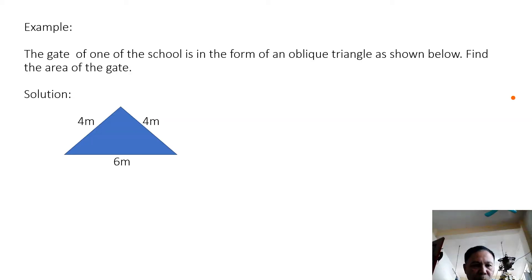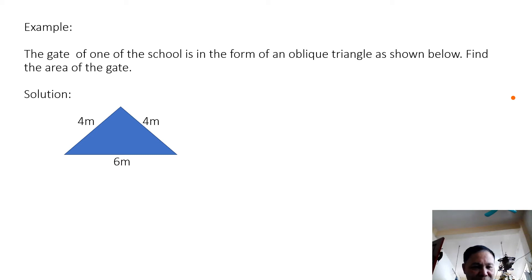The gate is in the form of an oblique triangle. Find the area of the gate. Examine the triangle first — it is an oblique triangle and all three sides are given. So what formula do we use? It should be Hero's formula.